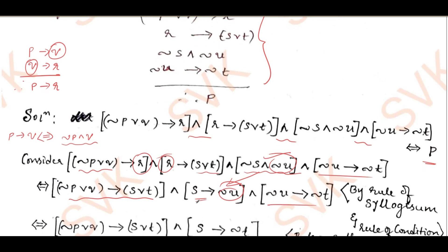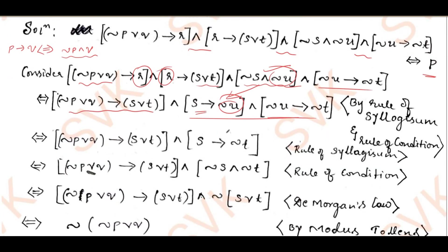By observing these two compound propositions, we can again apply rule of syllogism. From that I got s implies negation t. Again, I will apply rule of condition: s implies negation t can be written as negation s conjunction negation t. Then I can rewrite this by using De Morgan's law as negation of s disjunction t. Since we have negation s conjunction negation t, applying De Morgan's law gives negation of s disjunction t.